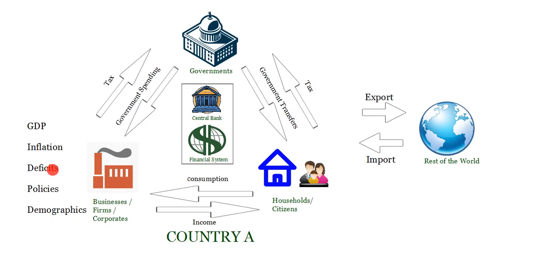The next thing we are going to talk about is deficits. Deficits, as the word suggests, is some kind of a shortage. There are basically two kinds: one is the shortage of money by governments, called fiscal deficit; and the shortage in our export-import area, called trade deficit. If we import more than we export, we are paying more money to the rest of the world than we are receiving, meaning the value of our imports is greater than our exports — that's a trade deficit, closely related to current account deficit.